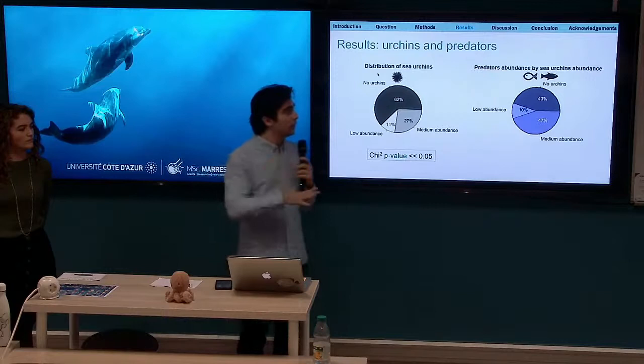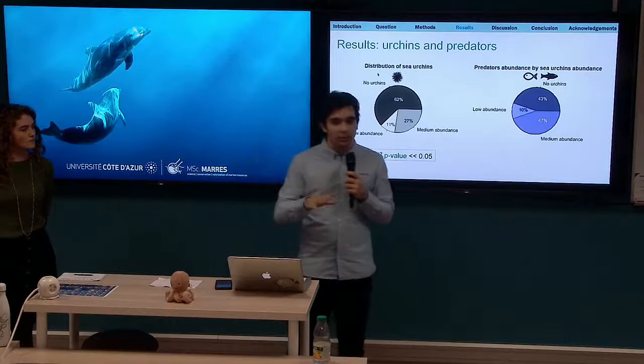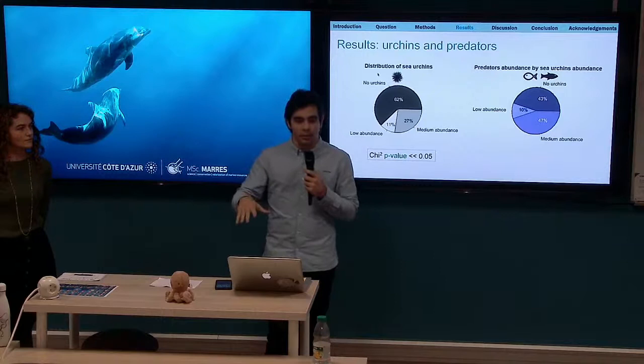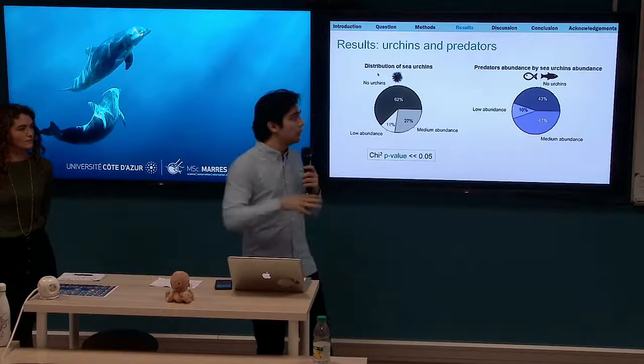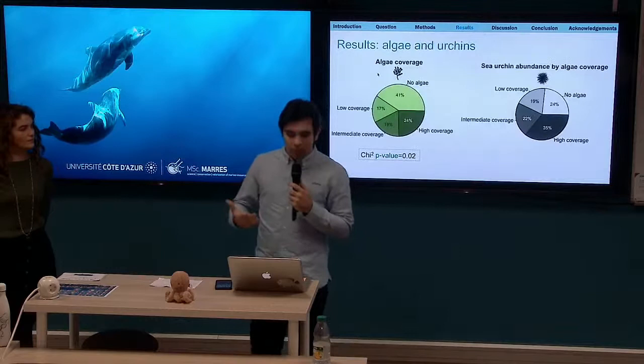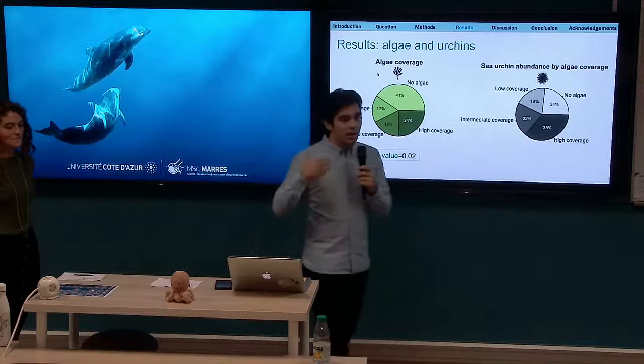That is why we performed the non-linear relationship analysis, to see if different factors have different importance for the relationships. For the non-linear relationship with urchins, we used the proportions of sea urchins found in Lérins Island during sampling. For predator abundance, there is clearly a different pattern of distribution — predators seem to prefer places where there are no urchins or where there are a lot of urchins. This preference is even clearer with only the breams, which prefer places where there are no urchins.